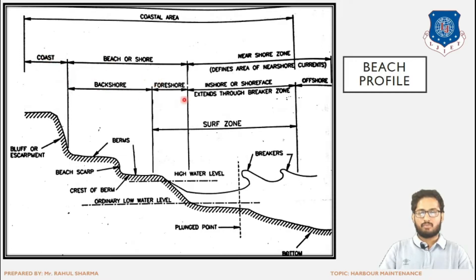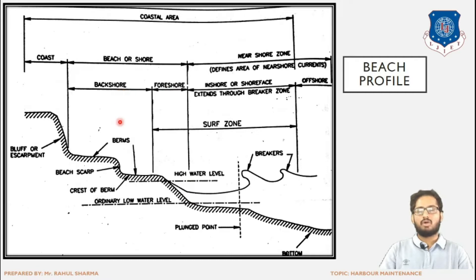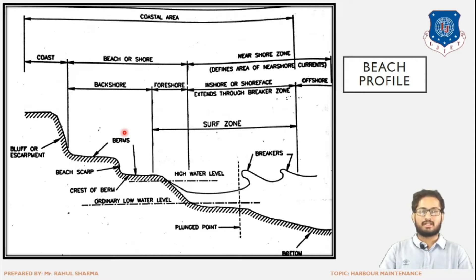The backshore is that region which varies between low water level and high water level. If we extend this line, it will pass through the low water level. So the shore is that portion which extends between low water level and high water level. The backshore normally has sediments and does not have water reaching it, except in the condition of high water level, when water will reach the portion of the backshore.